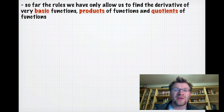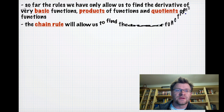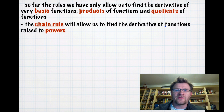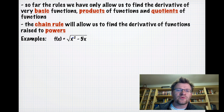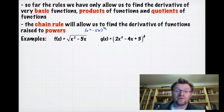So far the rules we have only allow us to find the derivative of very basic functions. We can find the derivative of products and quotients of functions. The Chain Rule will allow us to find the derivative of functions raised to powers — for example, f(x) = √(x²-5x), which is the same as (x²-5x)^(1/2), or g(x) = (2x³-4x+3)⁴.